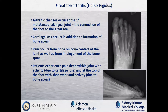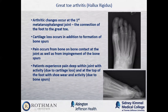Great toe arthritis, also referred to as hallux rigidus, involves arthritic changes at the first MTP joint. These manifest as cartilage loss and bone spur formation — a narrowing of the joint space and bone spurs most notable at the top of the toe area. Pain occurs from bone-on-bone contact as well as impingement of the bone spurs and pressure from shoes — both deep within the joint due to cartilage loss and on top of the foot with shoe wear.